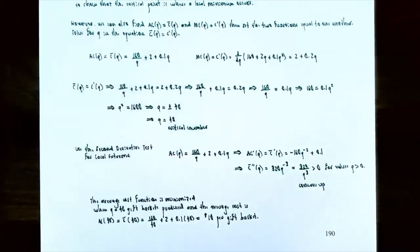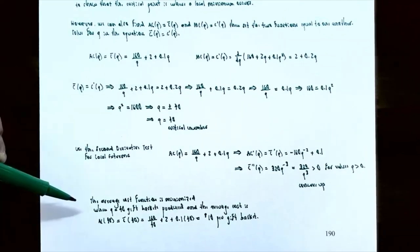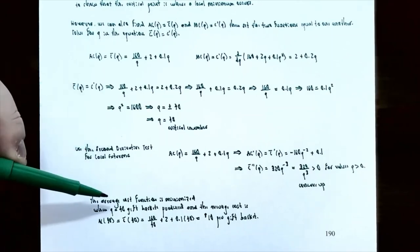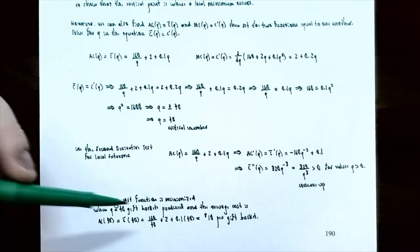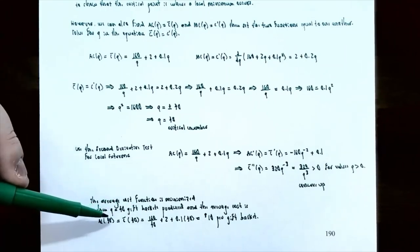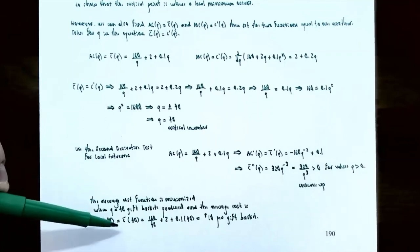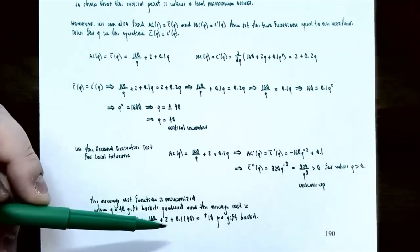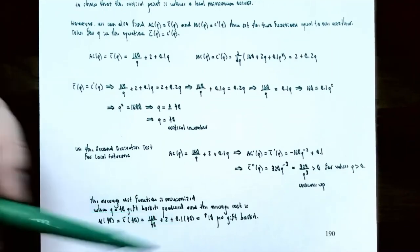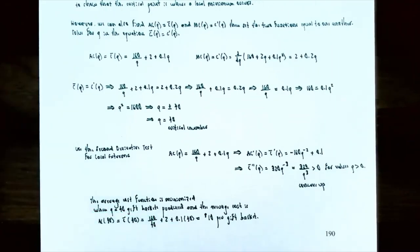So the average cost function is minimized when q = 40 gift baskets are produced. The minimum average cost is AC(40) = 160/40 + 2 + 0.1(40) = 4 + 2 + 4 = $10 per gift basket. So producing 40 gift baskets minimizes the average cost at $10 per basket.